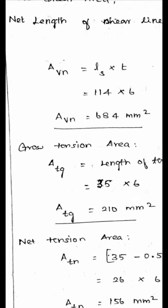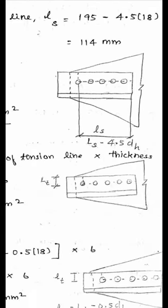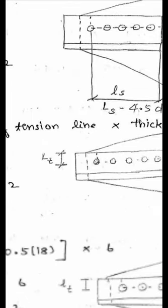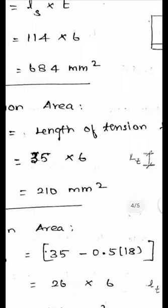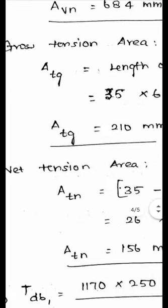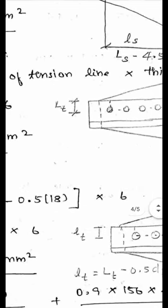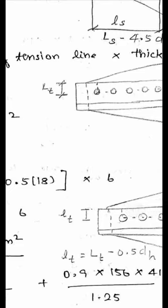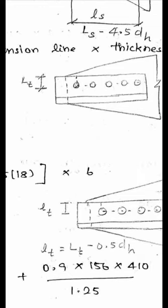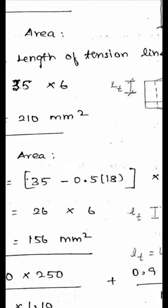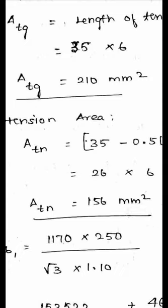The gross tension area ATG = LT × t, where LT = edge distance = 35 mm. ATG = 35 × 6 = 210 mm². For the net tension area, ATN = (35 − 0.5×18) × 6 = 26 × 6 = 156 mm². We now have all four areas: AVG = 1170, AVN = 684, ATG = 210, ATN = 156 mm².